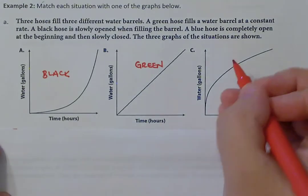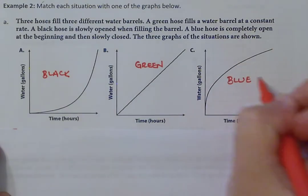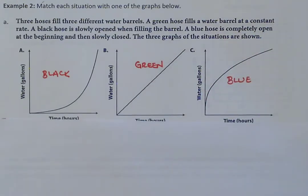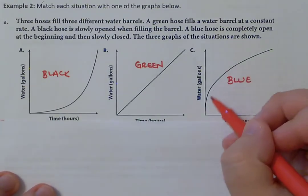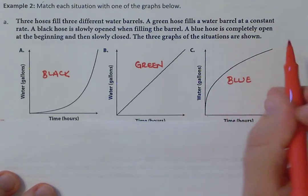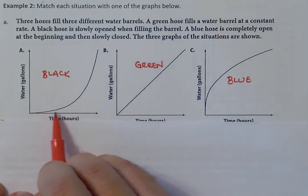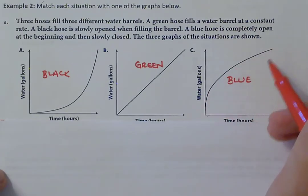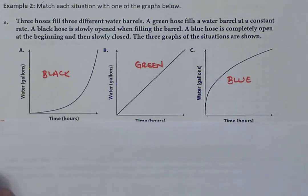By process of elimination, the last one is blue. The blue hose is completely open at the beginning, creating a rush of water right away, and then it is slowly closed — so a quick increase and then it slows down over time, curving off. That is how we do example 2 for section 3.1.